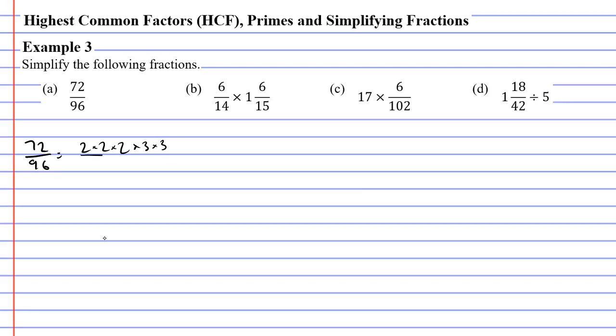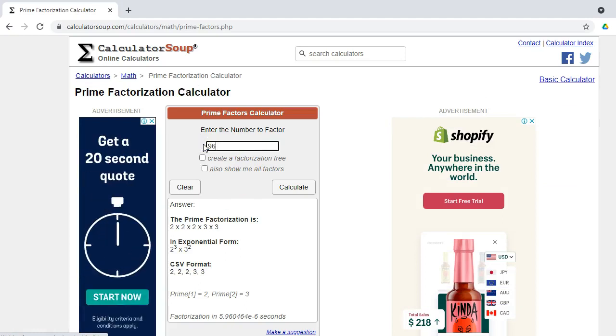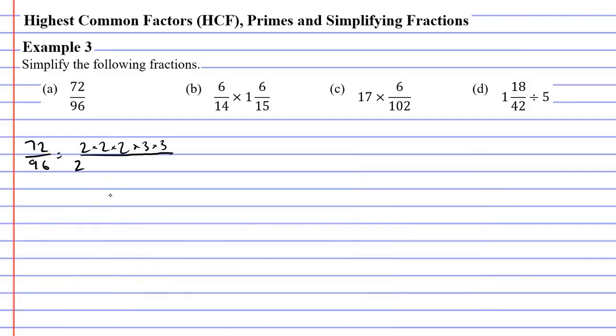Now, let's find the prime factors for 96. Bringing up our website, 96, let's calculate. And this time, we've got 1, 2, 3, 4, 5 twos, and 1 three. So, we're going to multiply 5 twos together, and then the 1 three. Alright, now that we've done that, we can just cancel. We can cancel 1 two above and below, another 2, and a third 2. And we can also cancel 1 of the 3s above and below, leaving us with 3 at the top and 2 times 2 down the bottom. Now, 2 times 2 is 4, so we can simplify this fraction to 3 over 4.